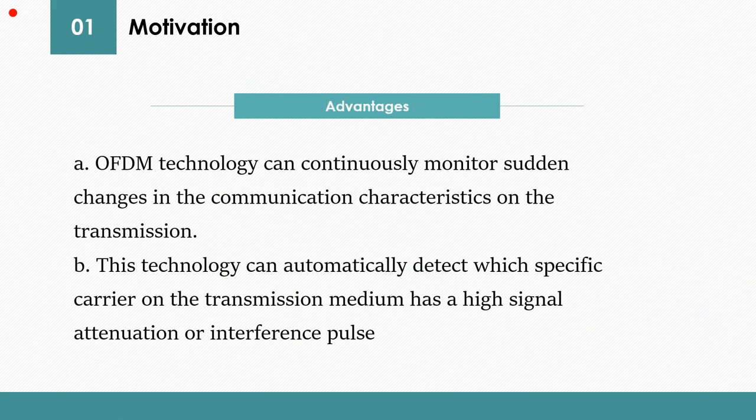Let me introduce some advantages of OFDM technology. The first one is OFDM technology can continuously monitor sudden changes in communication characteristics on the transmission. Since the ability of a communication path to transmit data changes over time, OFDM can dynamically adapt to it and turn on and off the corresponding carriers. The technology can automatically detect which specific carriers on the transmission medium have high signal attenuation or interference pulses, and then take appropriate modulation measures to enable the carrier at specified frequency to successfully communicate.